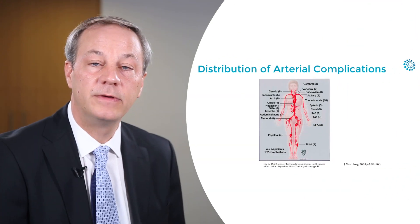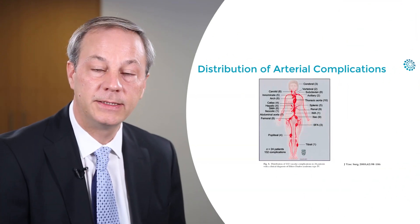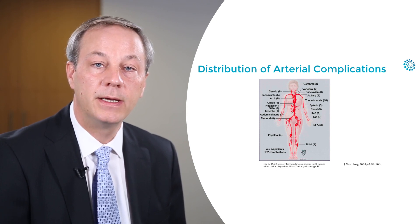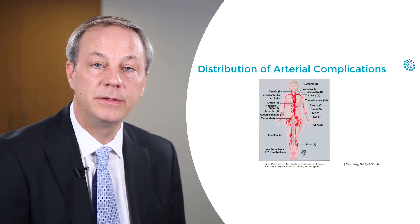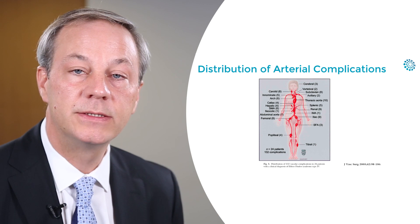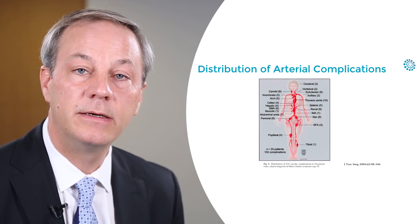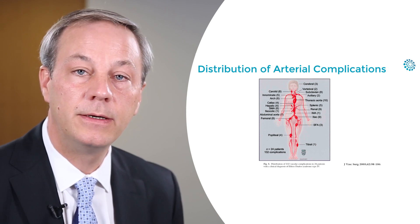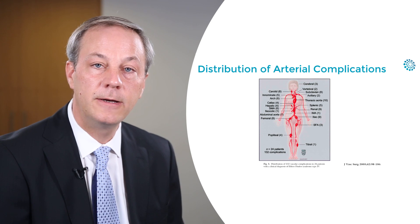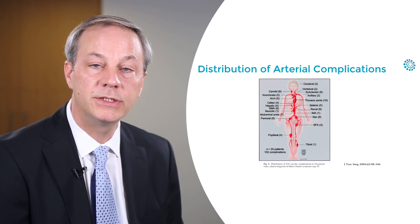What are the locations of arterial accidents? Medium-sized arteries as branches of the abdominal aorta, carotid or vertebral arteries, as well as iliac arteries are commonly affected. Involvement of the aorta is also common, predominantly of the abdominal aorta. Accidents involving the thoracic aorta are reported predominantly in patients that have had a fatal event.